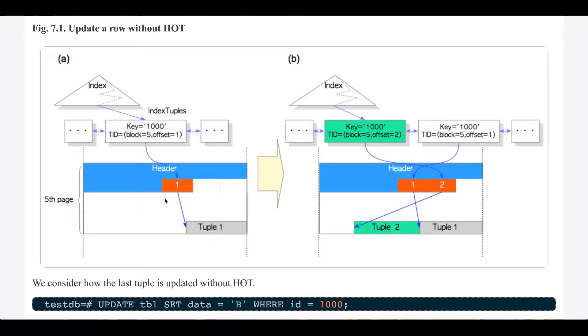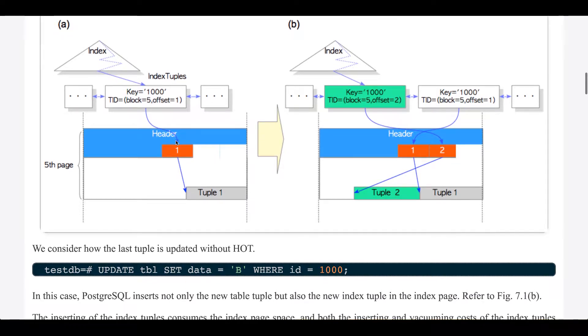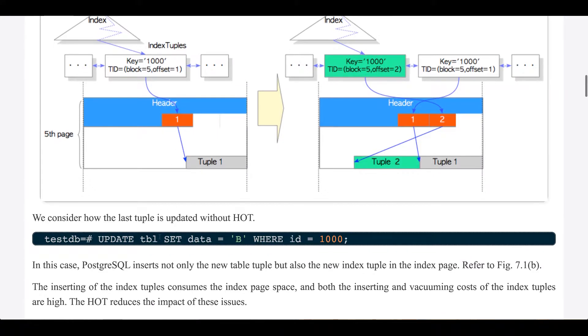Fifth page 1,51. We consider how the last tuple is updated without HOT. Update table set data equals b where id is 1000.